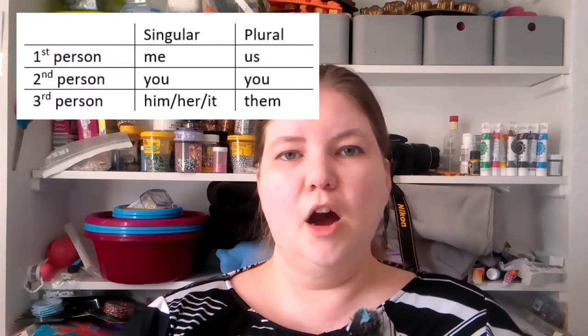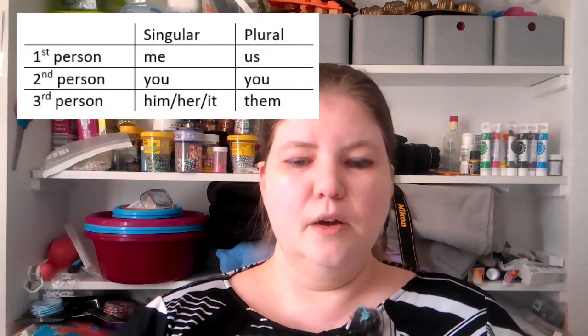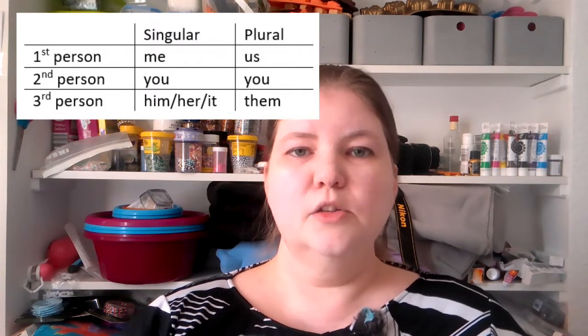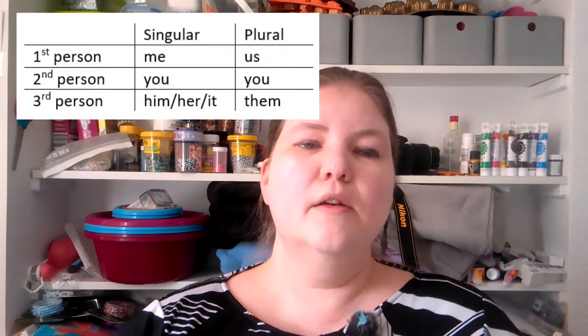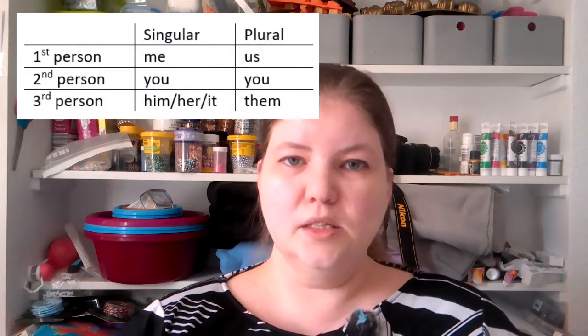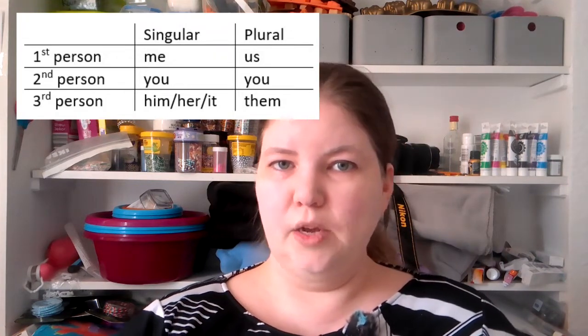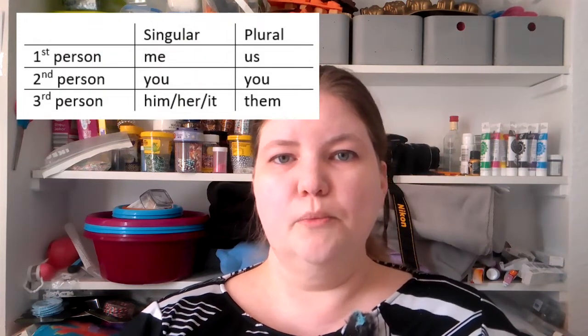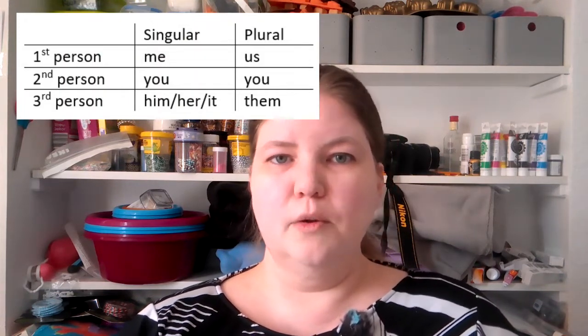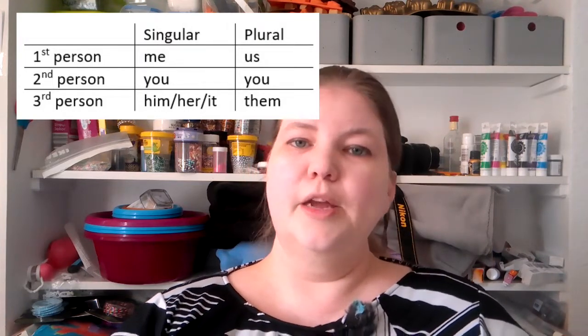I'd like to move on to object pronouns. Object pronouns are when you receive the action of the verb. For example, "give that to me" — "me" is the first person singular object pronoun: to me, for me, about me, talk about me. The plural form is "us": talk for us, to us, about us. It's also almost universally used after prepositions — any preposition like to, for, about, under, of. You get the idea.